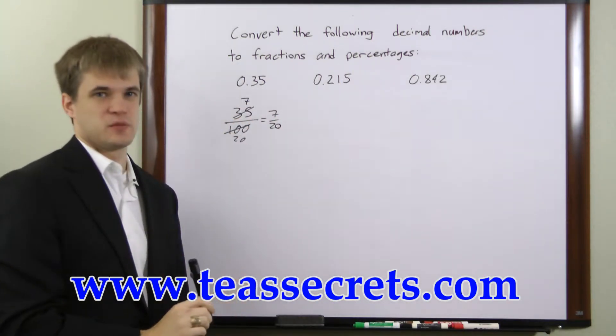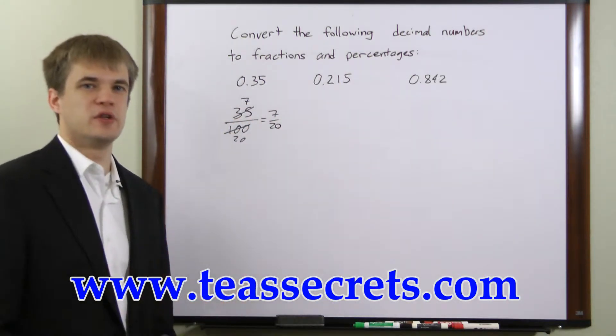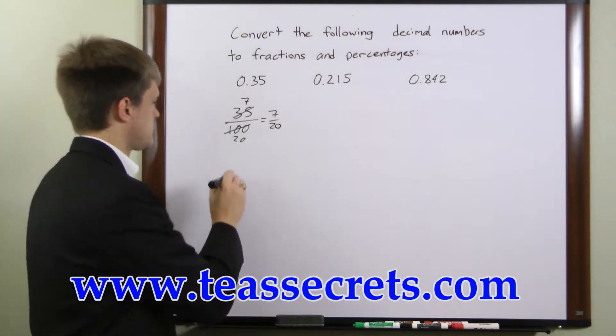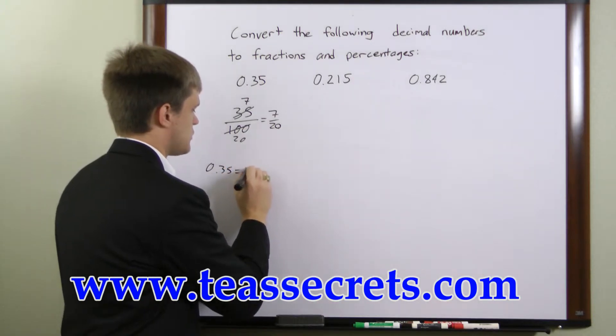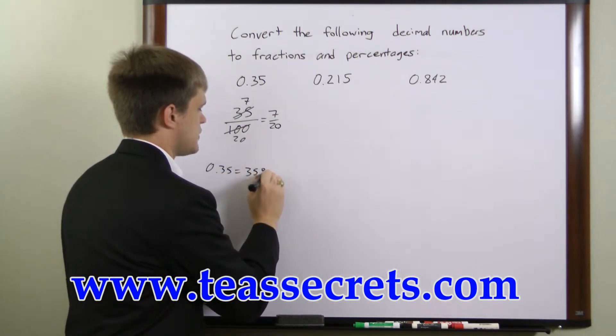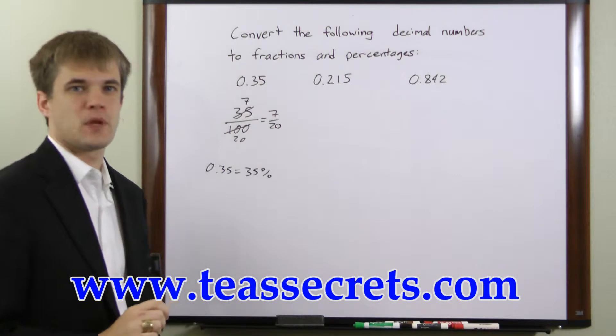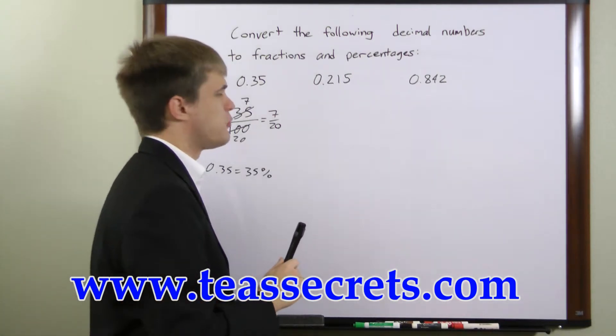To convert a decimal to a percentage, all we have to do is move the decimal point two places to the right, so 0.35 is equal to 35%. In the second example we have 0.215.